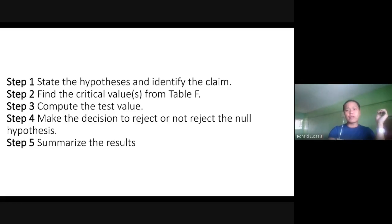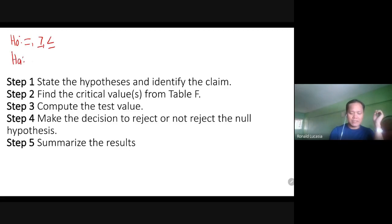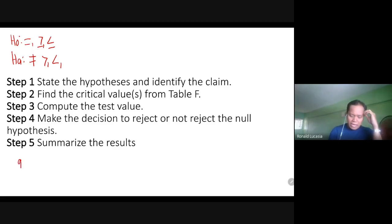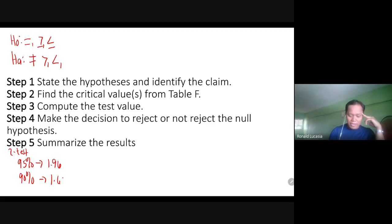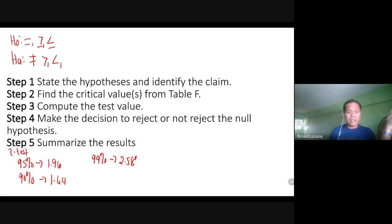Remember: the null hypothesis uses 'equal,' 'greater than or equal,' or 'less than or equal'; the alternative hypothesis uses 'not equal,' 'greater than,' or 'less than.' That's step one. Step two is to find the critical value. For a 95% confidence level using Z-test, the critical value is 1.96. For 90% it is 1.64, and for 99% it is 2.58.